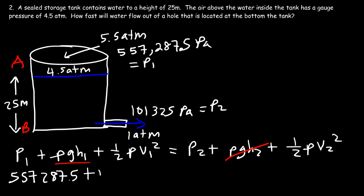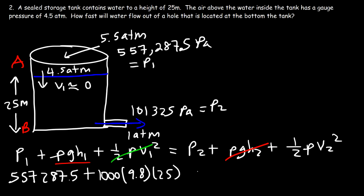The density of water is 1,000, times g times h1 of 25. We assume v1 is approximately 0 because the water level descends at a very slow rate in a large tank, so we don't need that term. P2 is 101,325 pascals. Our task is to solve for v2.